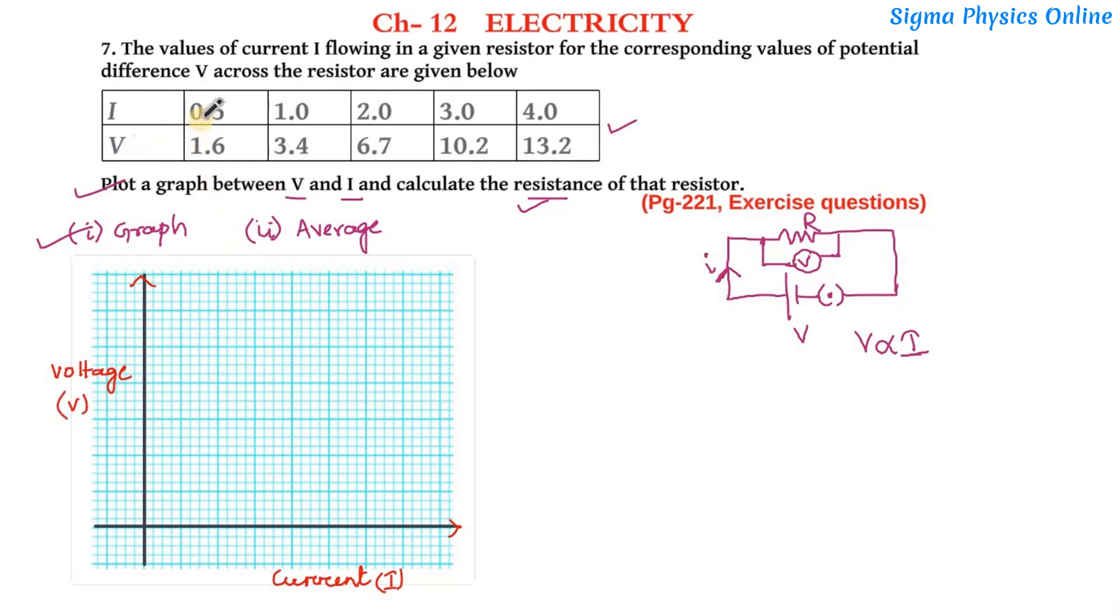Now let us plot the values. So the value of current and similarly the corresponding voltage values are: when the potential difference is 1.6, the current value is 0.5. This is 1.6 and 0.5.